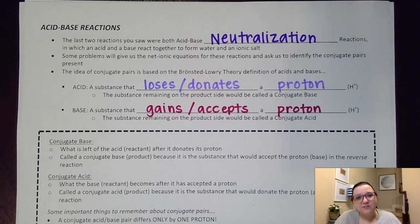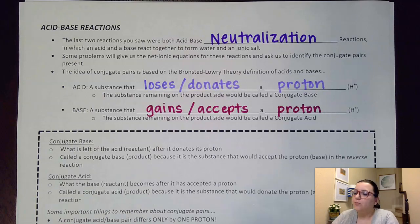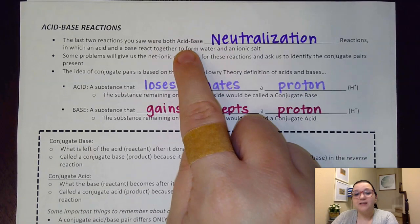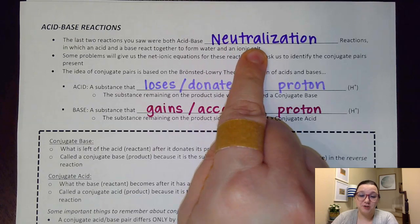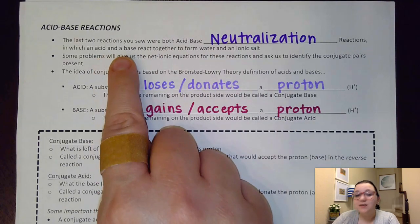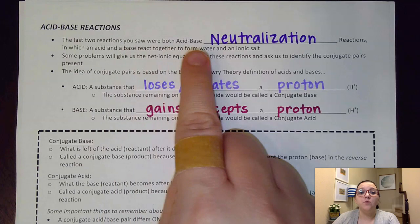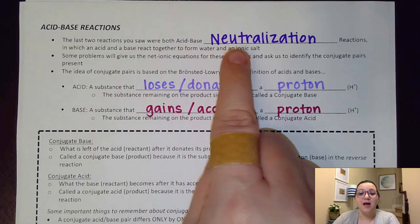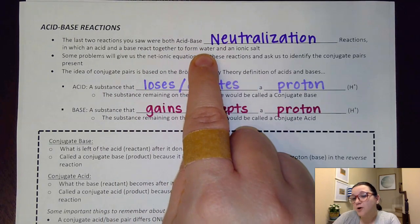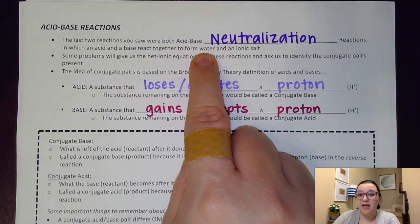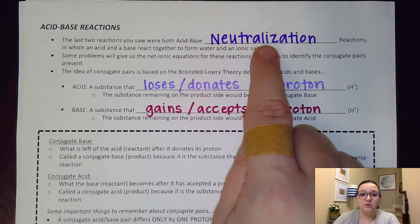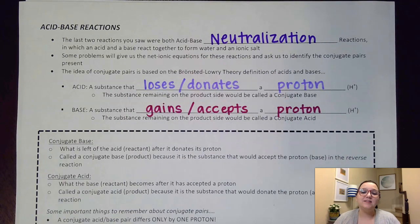In the last video, the very last two examples that we worked were both what are considered acid-base neutralization reactions, in which we have an acid and a base that react together to form water and an ionic salt. And because the water is neutral as far as its pH is concerned, that's why the process is called a neutralization — we're basically canceling out the pH effects from the acid and the base individually.